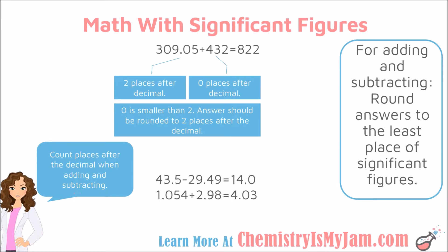This means that you are going to be counting the places after the decimal when you are adding and subtracting. For example, 309.05 has two places after the decimal, and I am adding that to 432, which has no places after the decimal. Whichever of those is the smallest — two places or zero places — is what I am going to use to round my answer. Since zero was smaller than two, my answer should have zero places after the decimal. So I would put all of this in my calculator and round the result to where there are no places after the decimal.